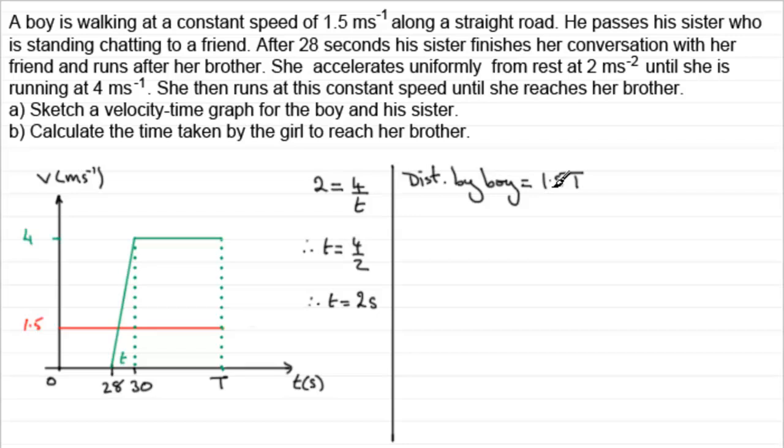Now as for the girl, the distance traveled by the girl will be the area of the trapezium. It's a trapezium because it's got the two parallel sides. And the area of a trapezium is the sum of the parallel sides times the distance apart all divided by 2.